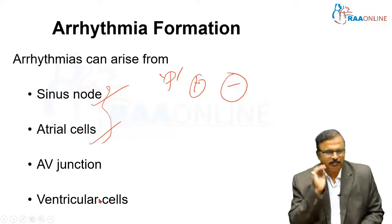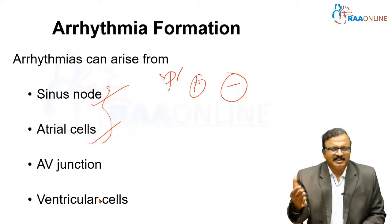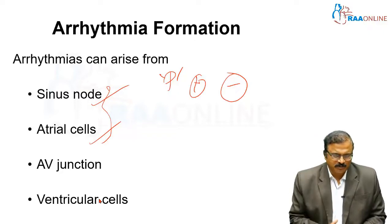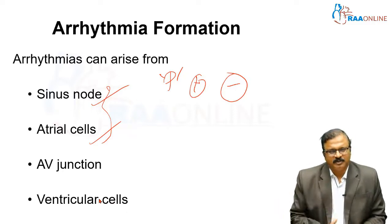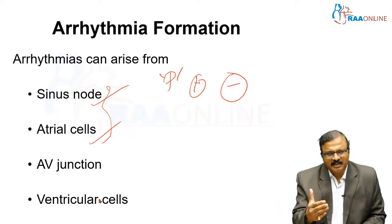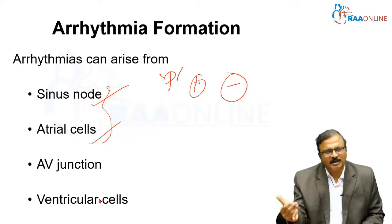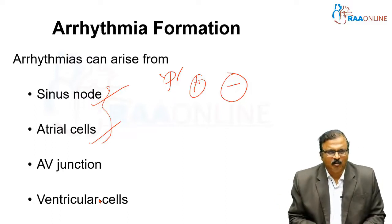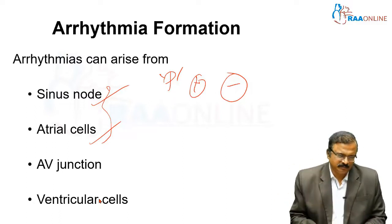That is very important. Then, automaticity — how much is the intrinsic heart rate for the sinus node, atrial cells, AV junction, and ventricular cells. That also determines what type of arrhythmia is present.